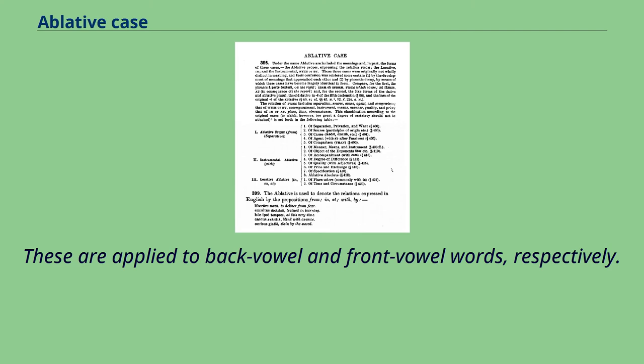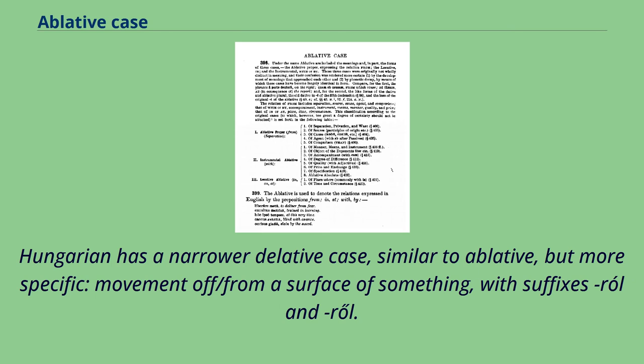Hungarian also has a narrower delative case, similar to the ablative but more specific — denoting movement off or from a surface of something — with suffixes -ról and -ről.